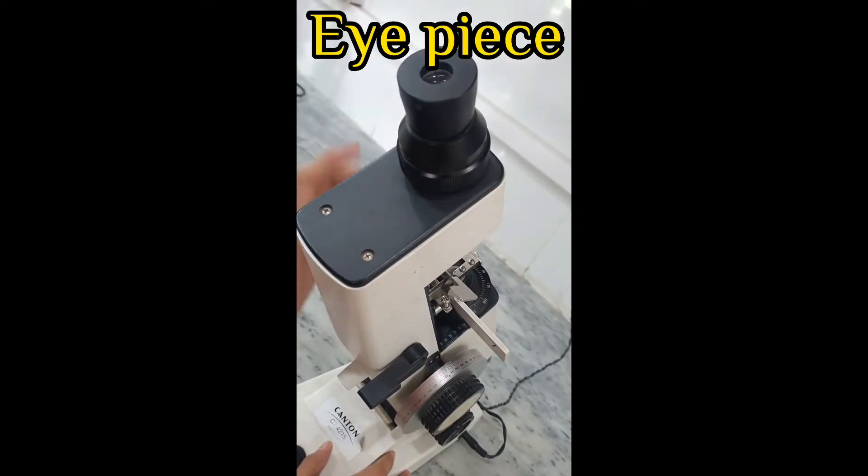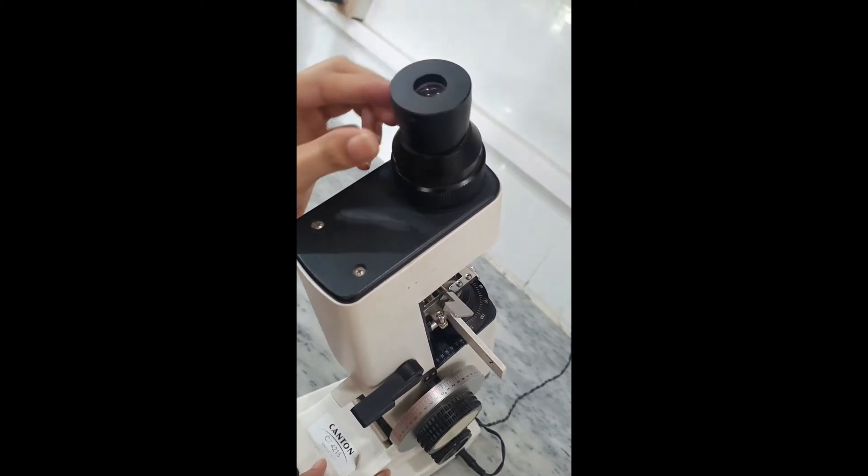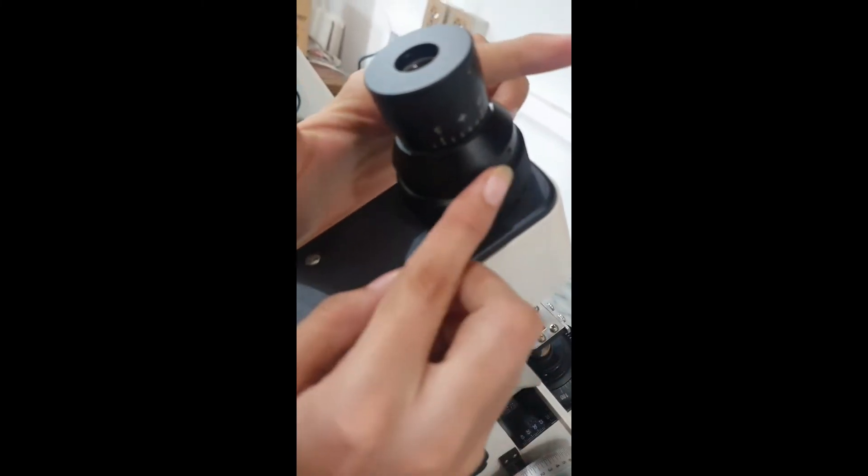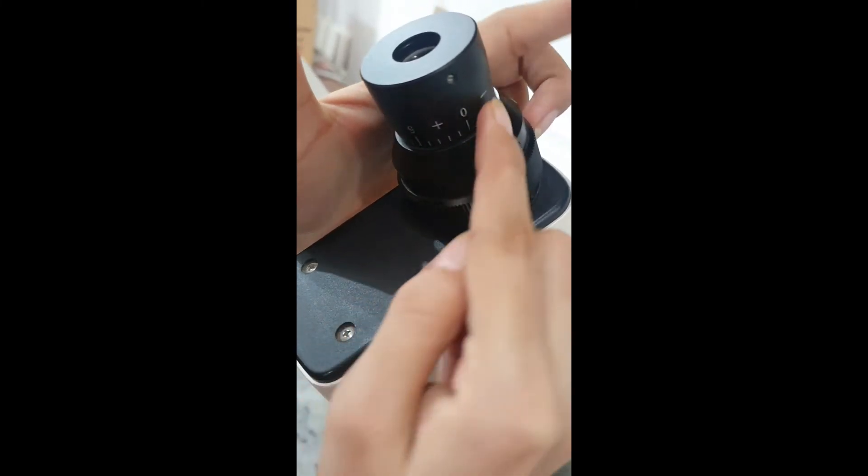Eyepiece - for adjusting the instrument according to the examiner's eye. The eyepiece should be focused manually till the reticle becomes clear.